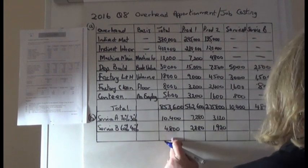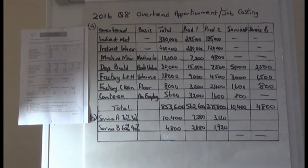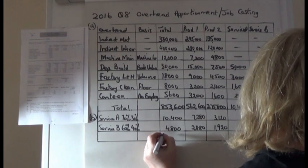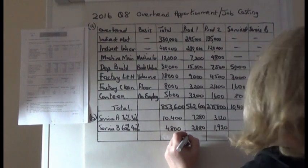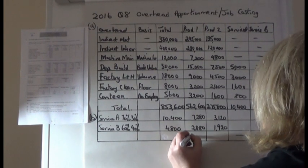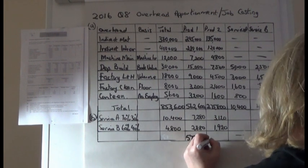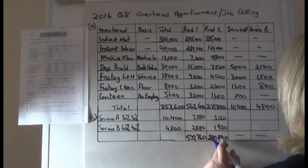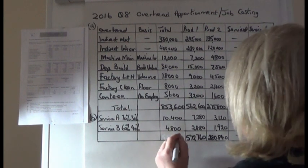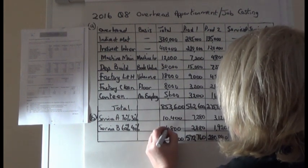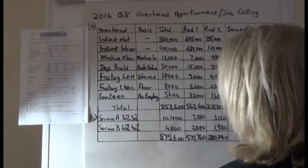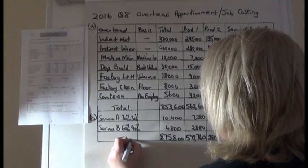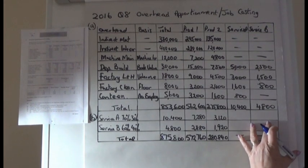We add these in and retotal. The overall total is 572,760, Production 1 total is 280,840, and Production 2 can be cross-checked from there. That completes Part B — the service department overheads have been eliminated and transferred into Production 1 and 2.